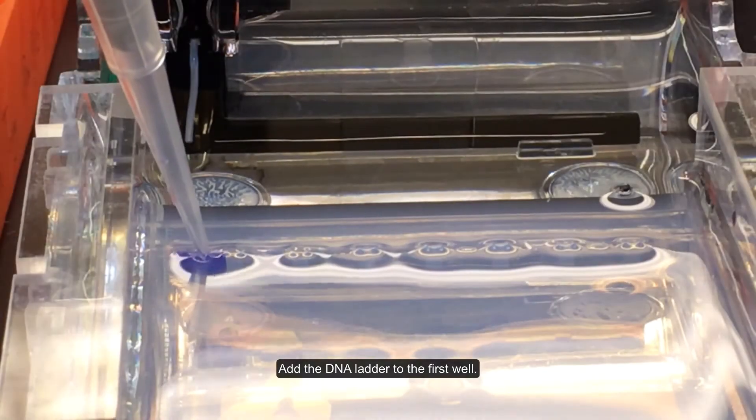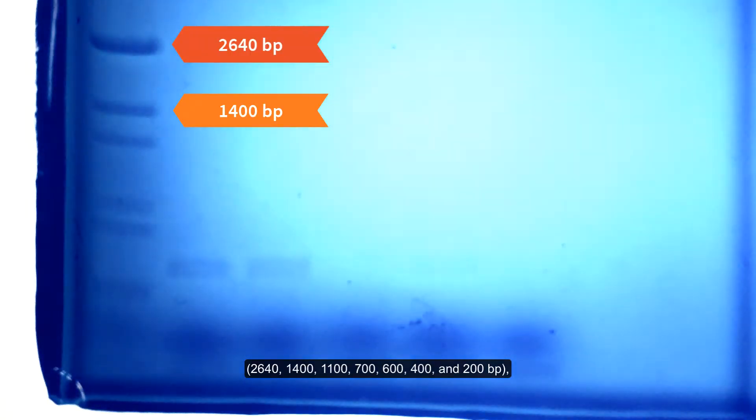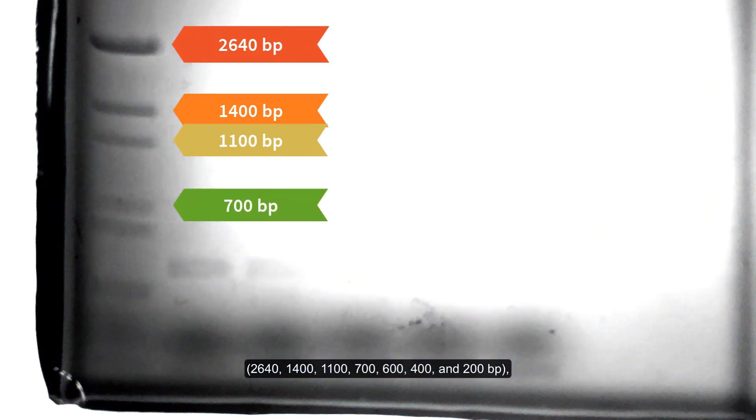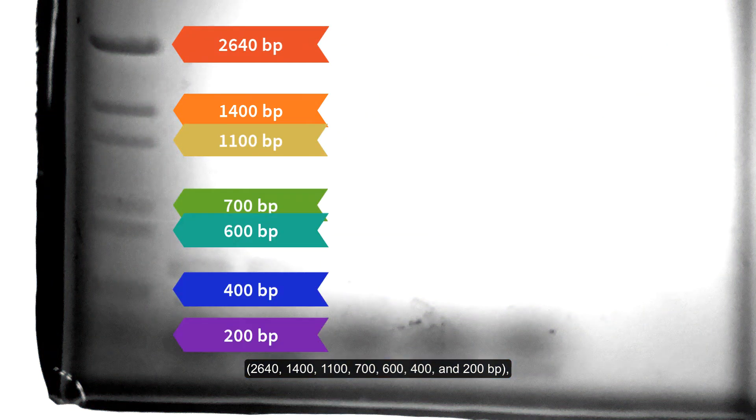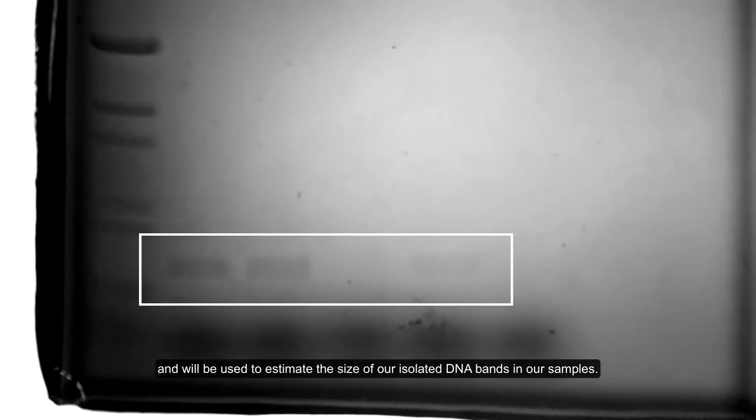Add the DNA ladder to the first well. This ladder contains DNA fragments of known lengths 2640, 1400, 1100, 700, 600, 400, and 200 base pairs, and will be used to estimate the sizes of our isolated DNA bands in our samples.